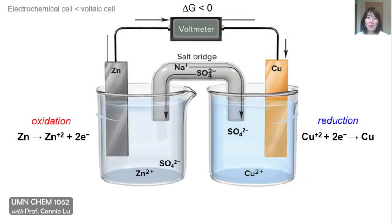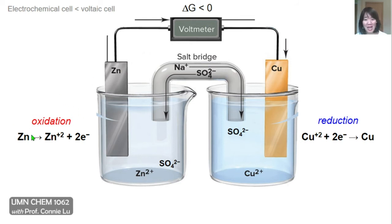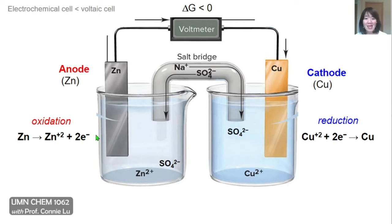Here's a diagram of the voltaic cell for the reaction we discussed, where zinc metal spontaneously reduces copper plus two ions. We have two half cells where oxidation and reduction are physically separated, with electrolyte solutions of zinc sulfate and copper sulfate. The zinc and copper metal electrodes are connected by a wire, and finally the salt bridge connects the two half cells. Because zinc is undergoing the oxidation reaction, the zinc electrode is called the anode. Because copper is where reduction occurs, the copper electrode is called the cathode. Electrons are generated in the left half cell and used up in the right half cell, so electron flow comes out of the anode and moves toward the cathode.